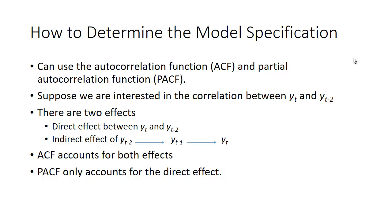Suppose we're interested in the correlation between y_t and y_(t-2). There are two effects: a direct effect between y_t and y_(t-2), so what happened two periods ago impacts what happens today directly, and an indirect effect, where what happened two periods ago affects what happened one period ago, which also affects what happens today.